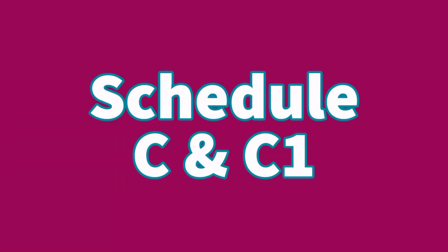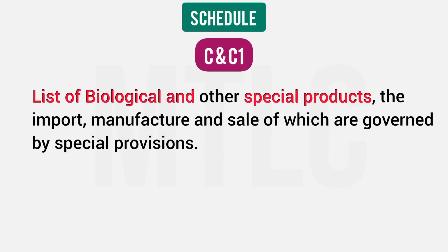Schedule C covers biological and other special products. This includes their import, manufacture, sale, etc. Biological and other special products are listed in Schedule C and C1.